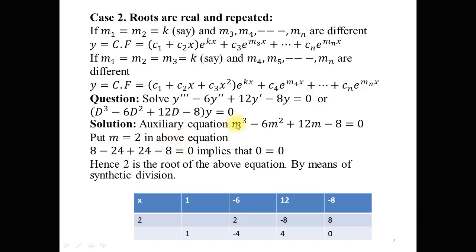Putting m = 2: 2³ - 6·(2²) + 12·2 - 8 = 0, which gives 8 - 24 + 24 - 8 = 0, implying 0 = 0. So m = 2 is a root of this auxiliary equation.